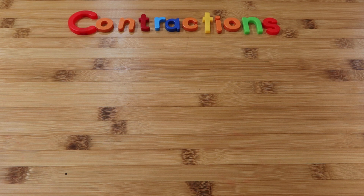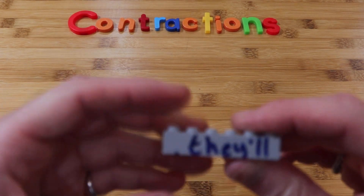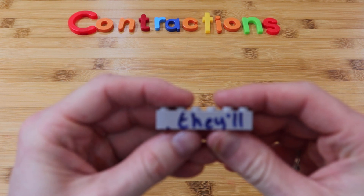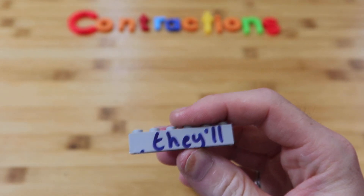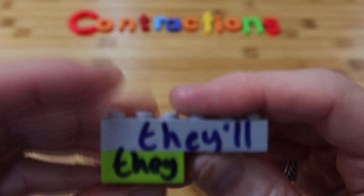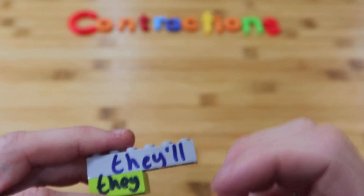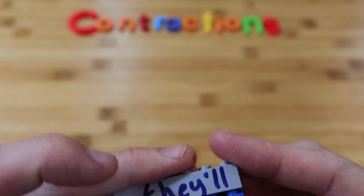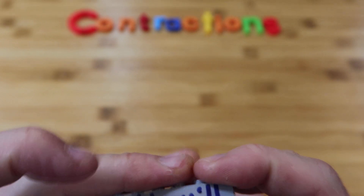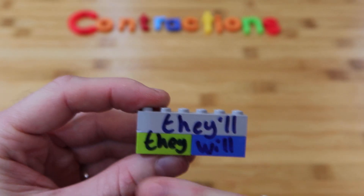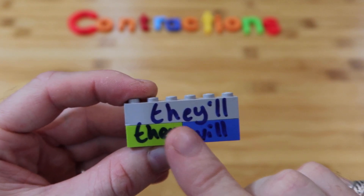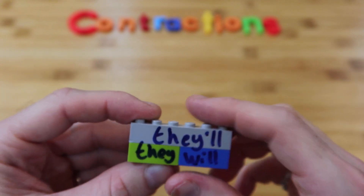So if we have this word — this word is they'll. You might have seen that word before. Well, what does that mean? That means they will. So that's why they'll is a contraction, because we've shortened it. Without it, we've got two separate words: they will. But we could say they'll. That is the contraction.